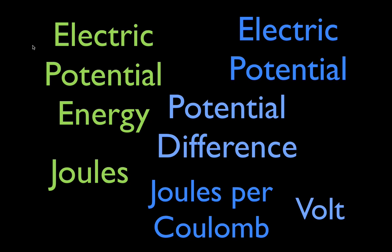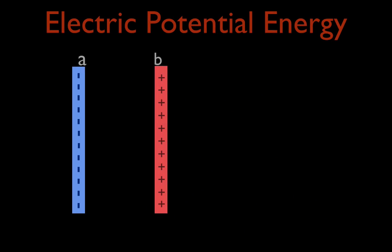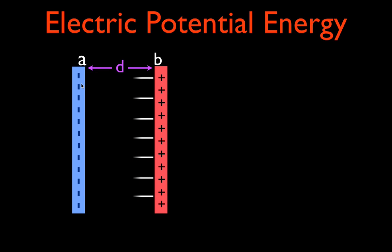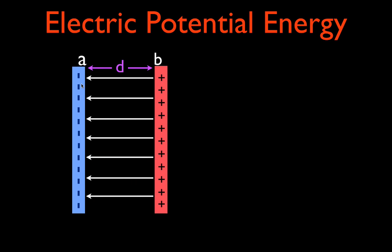Today we are going to talk about electric potential energy, and this is the situation. We have two plates — a positively charged plate and a negatively charged plate. They are separated by this distance d, and because they're charged plates, there is an electric field between those plates, and the field goes from the positive plate to the negative plate, just like it does with a point charge.